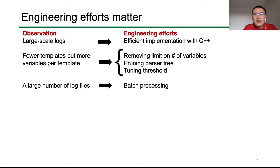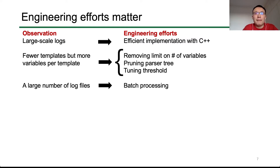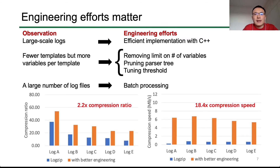Good engineering efforts are critical to fully realize the potential of parser-based methods. To handle large-scale logs efficiently, we re-implemented the parser-based approach in C++, which improves speed dramatically. As a result, we can remove the limit on the number of variables without significantly slowing down compression. We also introduced other optimizations such as pruning the parser tree, threshold tuning, and batch processing. By combining these engineering efforts, compared with LogZip, we achieve 2.2 times compression ratio and 18.4 times compression speed on average.